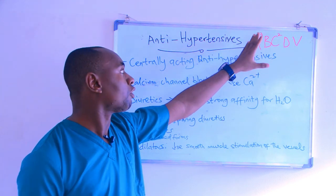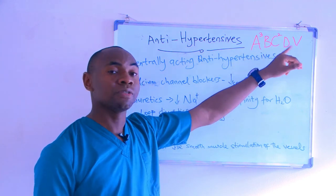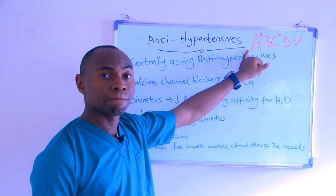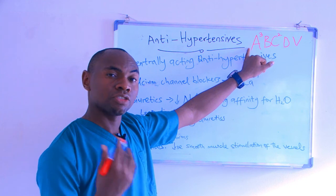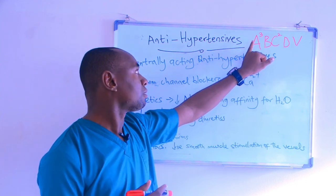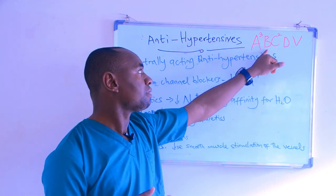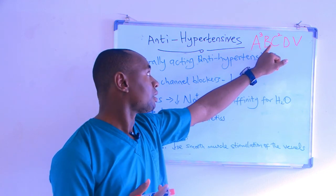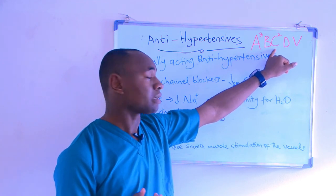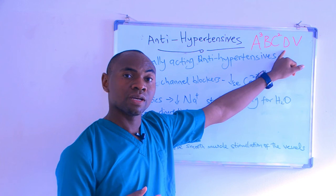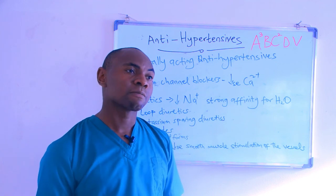In summary, the mnemonic A3BC2DV covers all eight classes of antihypertensives: the first A is alpha blockers, the second A is angiotensin 2 receptor blockers, the third A is angiotensin converting enzyme inhibitors, B is beta blockers, the first C is centrally acting antihypertensives, the second C is calcium channel blockers, D is diuretics, and V is vasodilators.